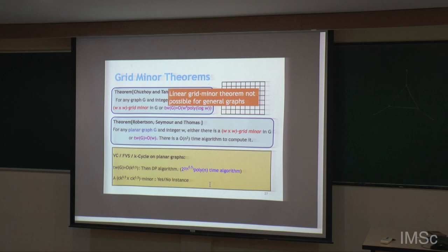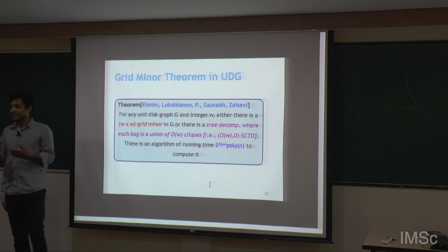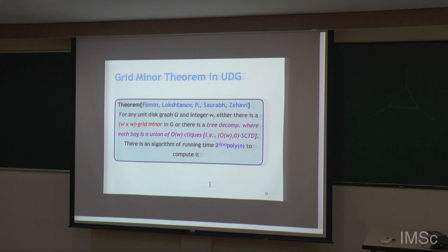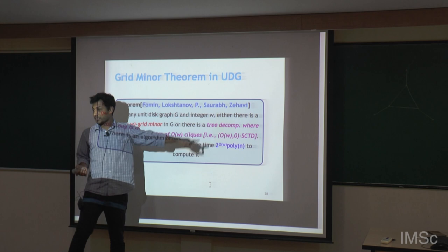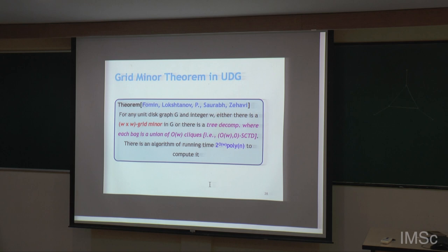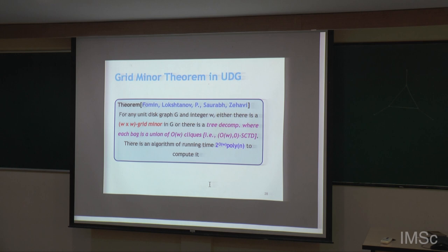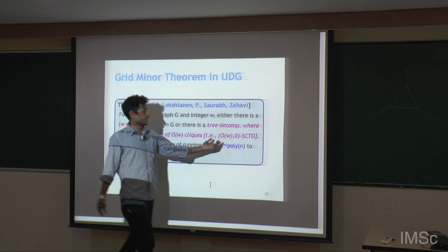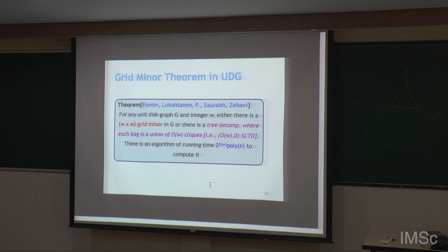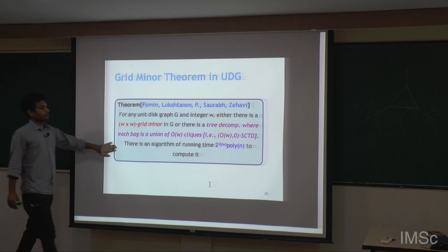What we prove is: for unit disk graphs, we can come up with a kind of structured grid minor theorem. Given a unit disk graph G and a positive integer W, either there is a W×W grid minor in G, or there is a tree decomposition where every bag is a union of O(W) cliques. Its tree width could be large, but every bag can be partitioned into O(W) cliques. And this can be computed efficiently.